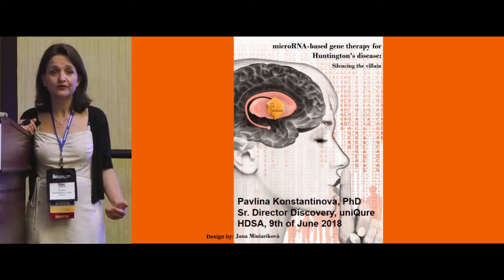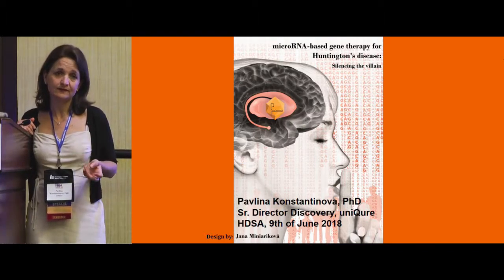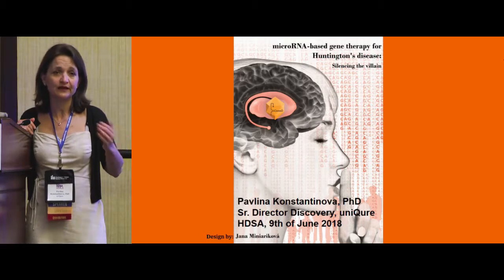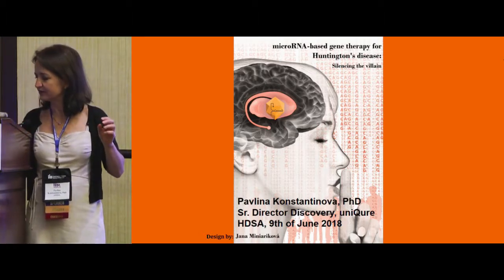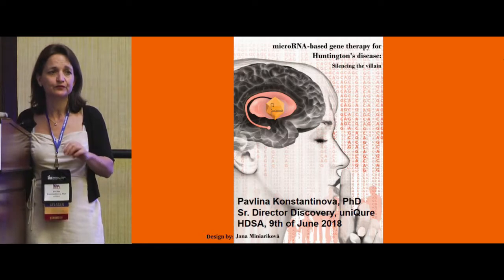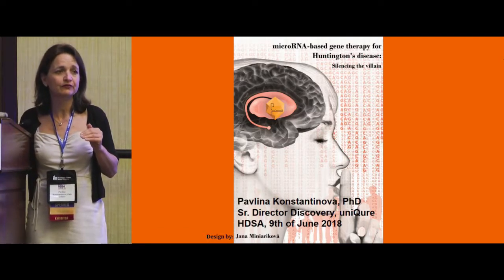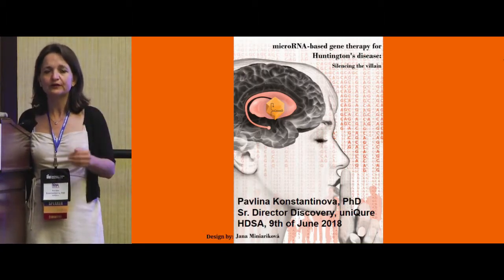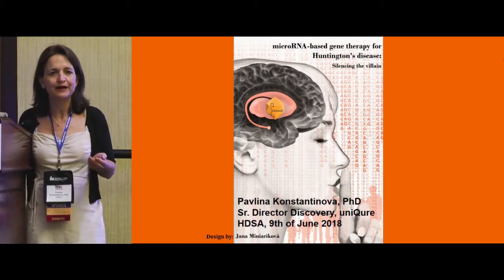Another major question is whether lowering Huntington in the brain can be measured in the CSF. In this experiment with five-year-old pigs at the six-month data point, we set the baseline at 100% before dosing. We took CSF samples at three and six months after injection and measured human Huntington levels. We were pleasantly surprised — similar to other studies — that we can measure lowering of human Huntington in the cerebrospinal fluid, giving us confidence for developing biomarkers in clinical studies.